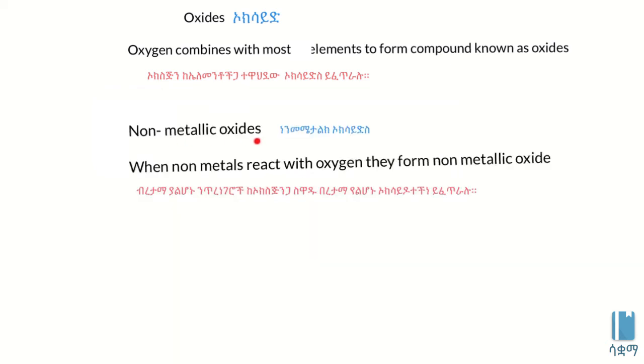Non-metallic oxides are formed when non-metals react with oxygen. For example, carbon dioxide, phosphorus oxide, and nitrogen oxide are all non-metallic oxides. These are examples of non-metallic oxides formed when non-metals combine with oxygen.